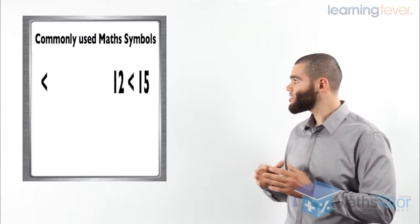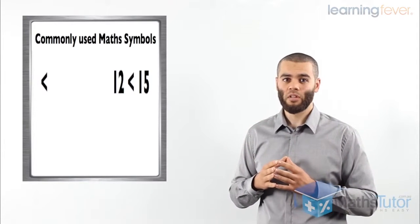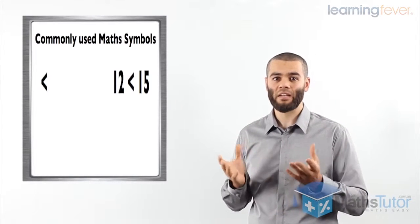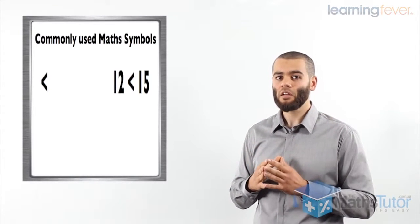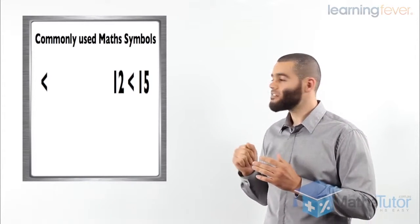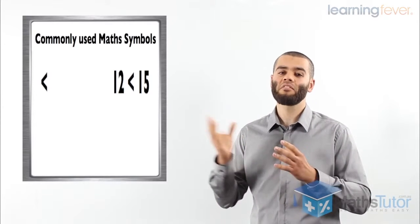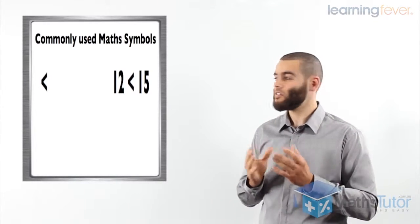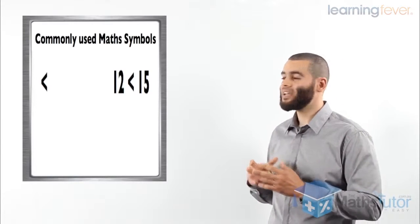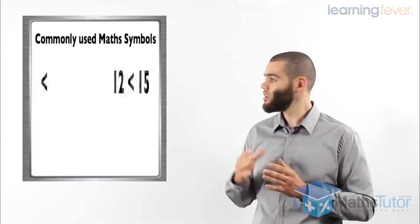The next symbol is the less than symbol. The less than symbol actually looks like an L — I like to remember it that way. It states that one number is less than another number. For example, 12 is less than 15.